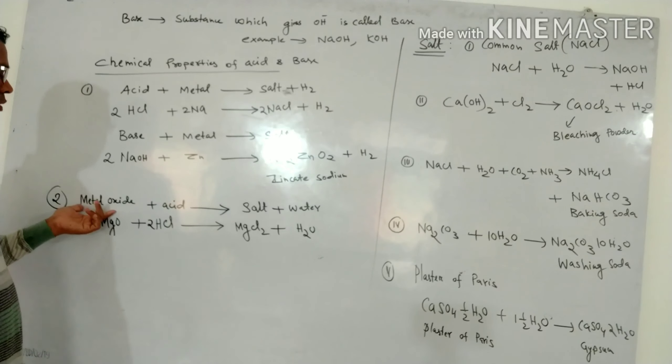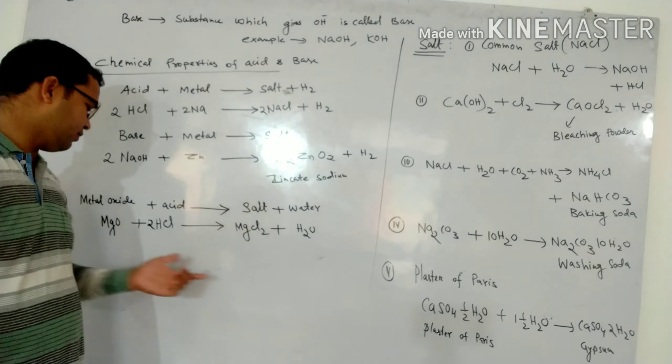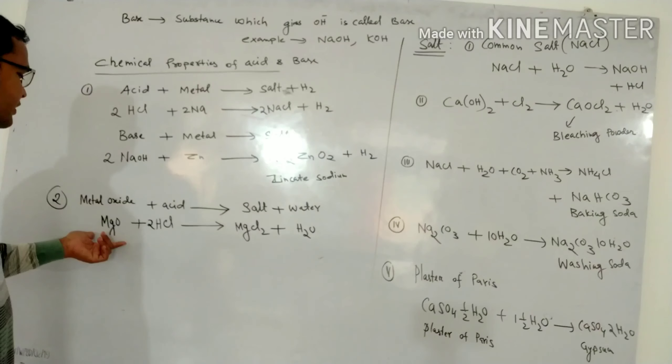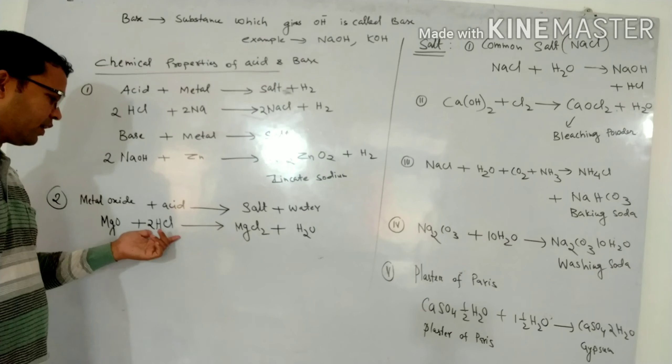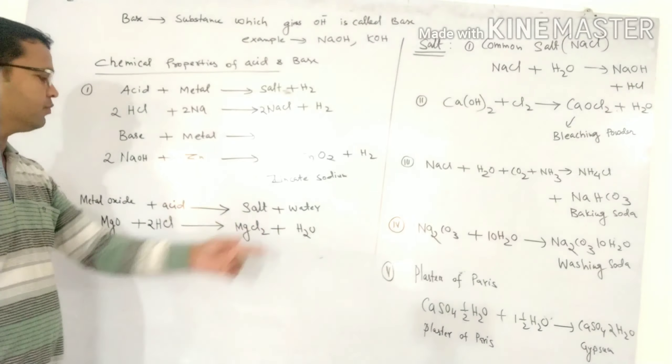Next, metal oxide. Metal oxide react with acid give salt and water. For example, magnesium oxide react with hydrochloric acid give magnesium chloride and water.